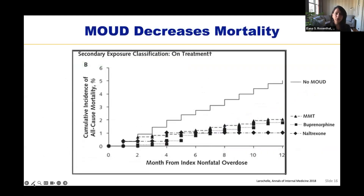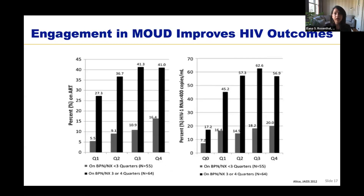Medication for opioid use disorder also reduces mortality. Data from a study in Massachusetts evaluated mortality in patients with a recent non-fatal overdose. Patients not on MOUD had the highest rates of mortality, while engagement in MOUD was significantly associated with decreased mortality for a year after overdose. Engagement in MOUD is also associated with improved outcomes in people living with HIV, including improved uptake, adherence, and retention to ART, as well as higher likelihood of viral suppression.